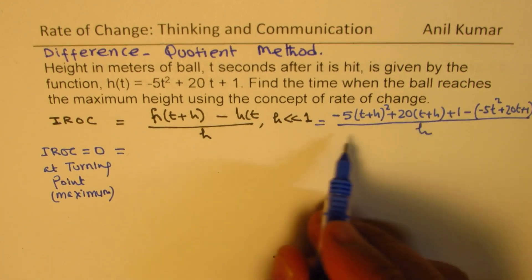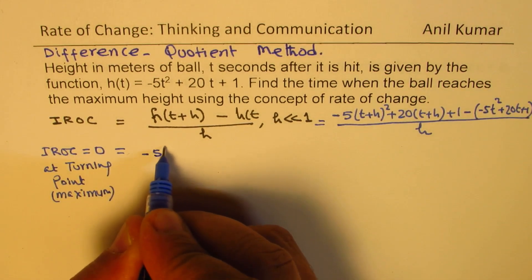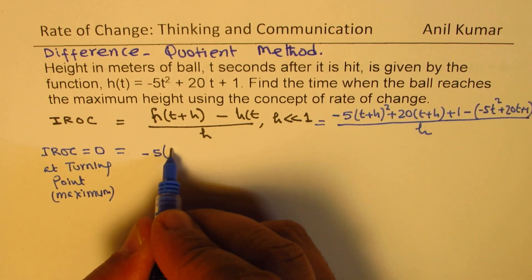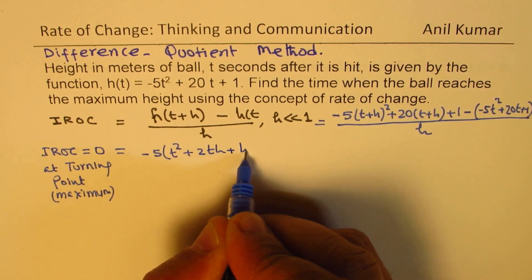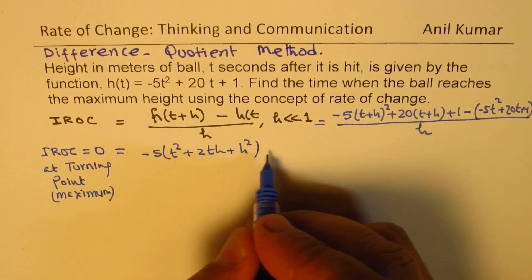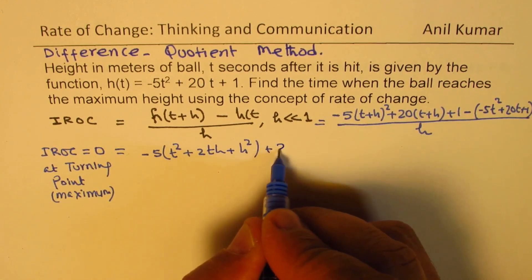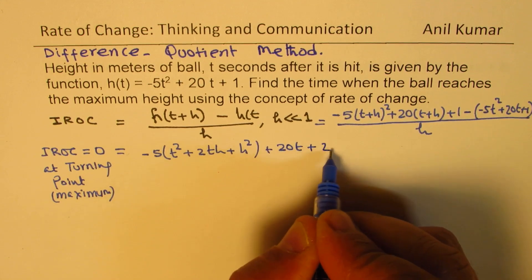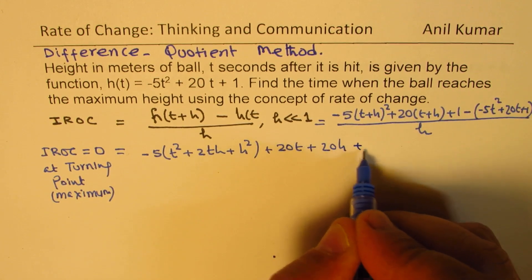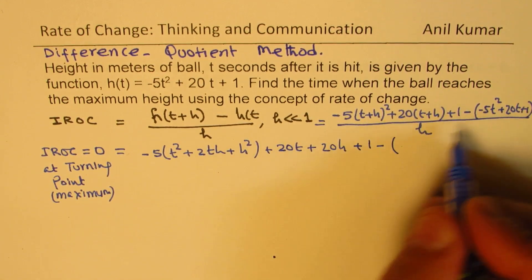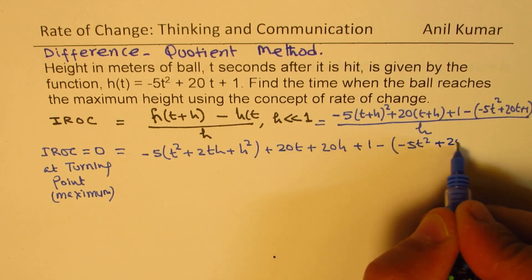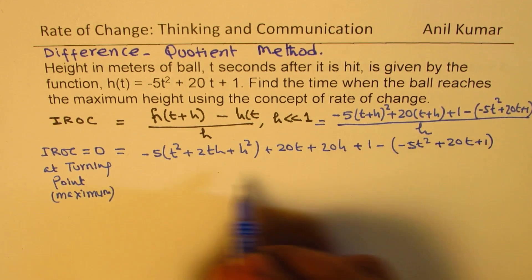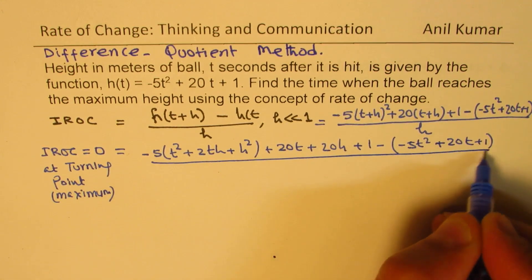Let us expand this. So we get minus 5(t + h)² gives us t² plus 2th plus h², right? Here we have plus, open the bracket, 20t plus 20h plus 1 minus, here we have minus 5t² plus 20t plus 1. Everything divided by h.